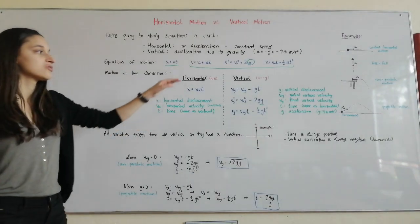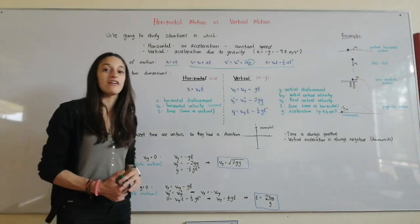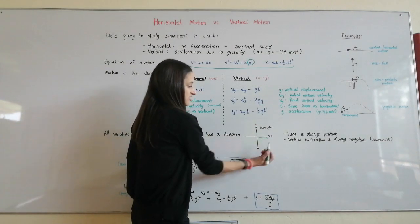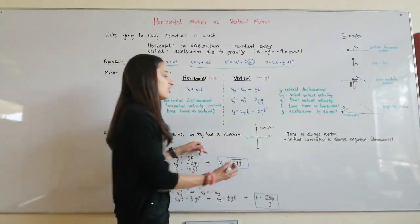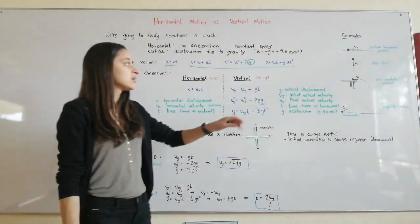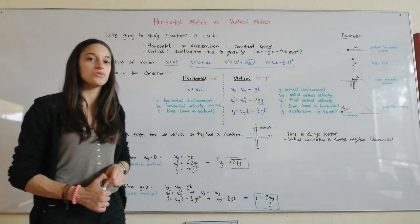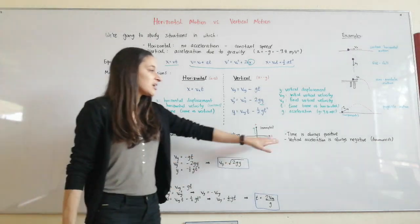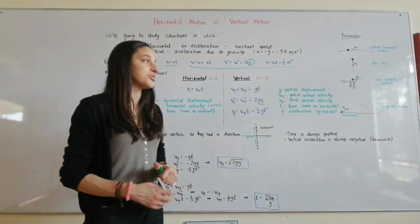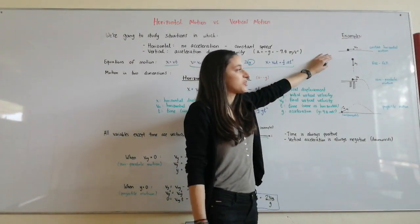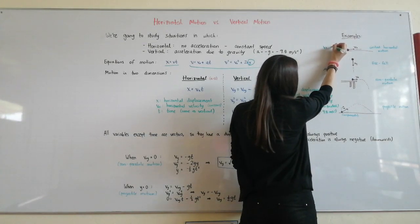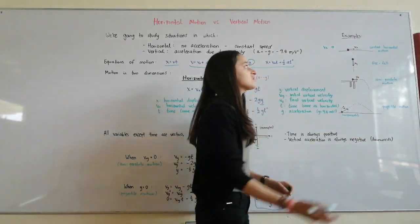All of these variables — both horizontal and vertical, except for time — are vectors, meaning they have a direction. To the right in horizontal is positive, and to the left is negative. Up is positive in vertical, and down is negative. That's why the acceleration due to gravity, which points downward, is always negative. Time is always positive because it's not a vector. So for constant horizontal motion moving to the right, vx is positive and the displacement is also positive.